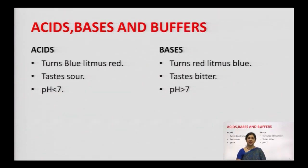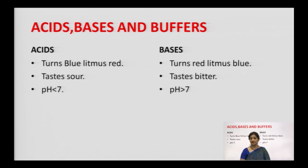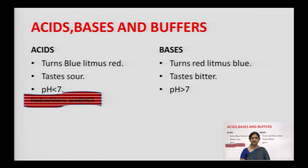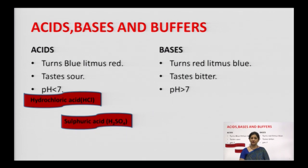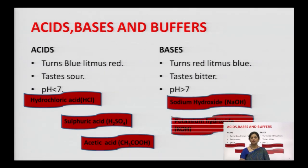The first topic is Acids, Bases and Buffers. Acid is not a new term for you — you have heard about acids and bases since class 7th. Acids are substances which generally turn blue litmus red. They taste sour and have a pH less than 7. On the other hand, bases or alkaline substances turn red litmus blue. They taste bitter and have a pH greater than 7. Examples of acids include hydrochloric acid, sulfuric acid, and acetic acid. Bases include sodium hydroxide (NaOH) and potassium hydroxide (KOH).